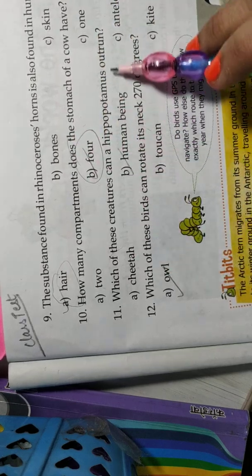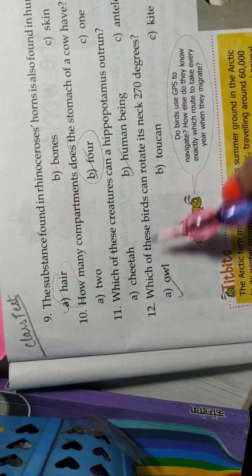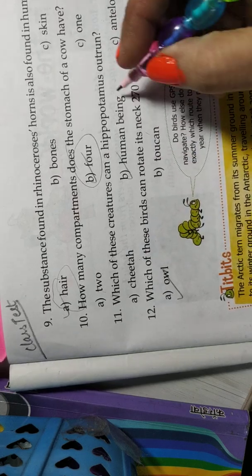Which of these creatures can a hippopotamus outrun? Cheetah, human being, antelope. Human being. B is the correct answer.